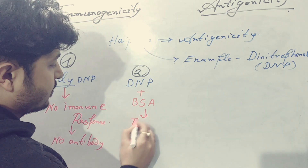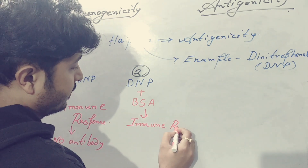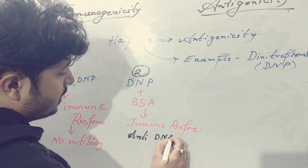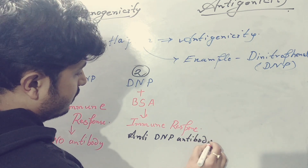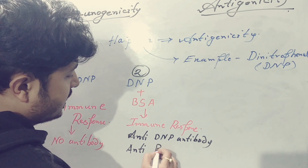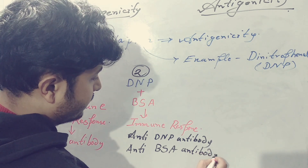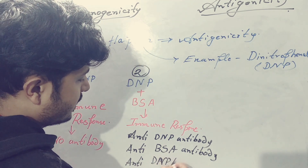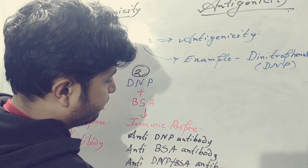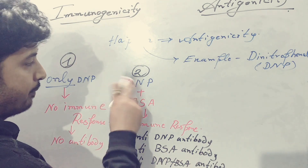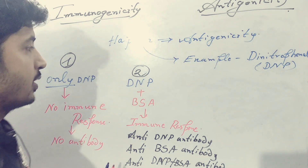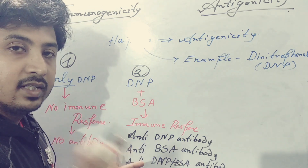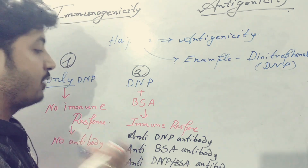In scenario two, when DNP is combined with BSA, anti-DNP antibodies can be seen in your serum, and anti-BSA antibodies can also be seen. That means the combined molecule — DNP plus BSA — will generate antibodies against only DNP, against only BSA, and also against the molecular antigen determinants formed by the combined DNP and BSA. Those will also generate antibodies.